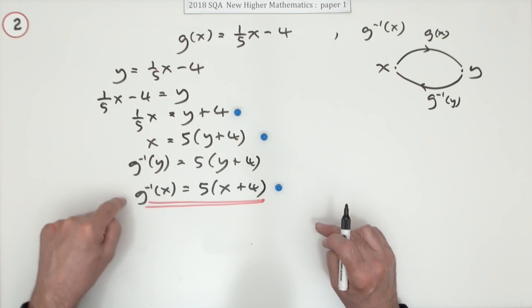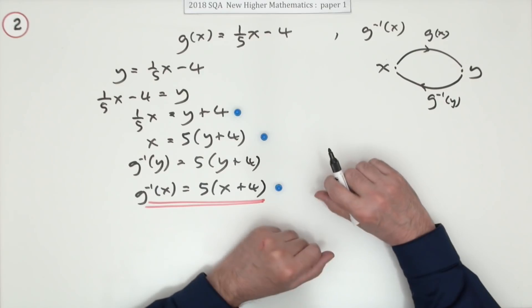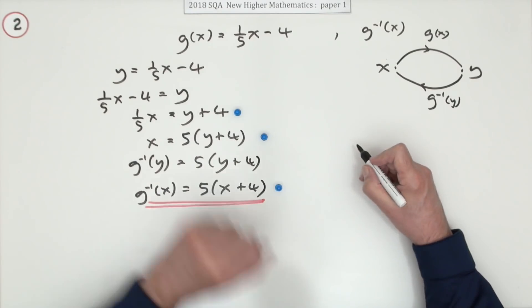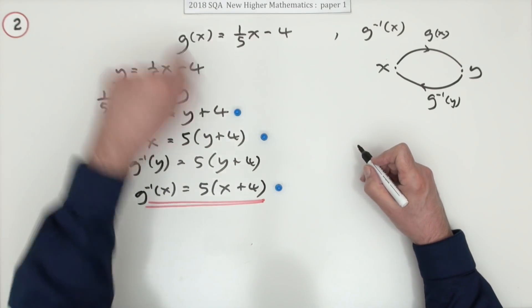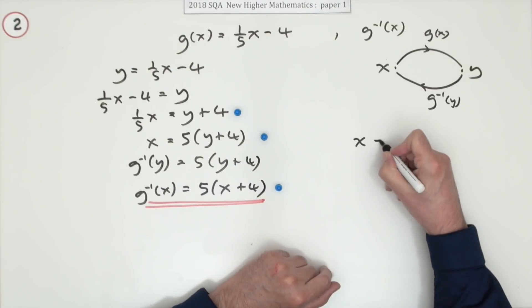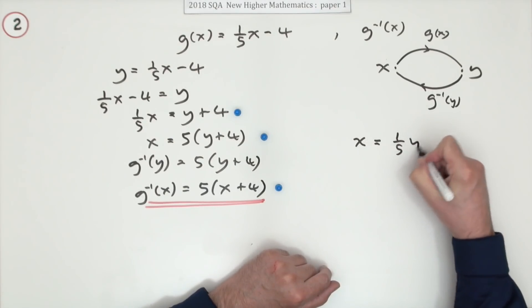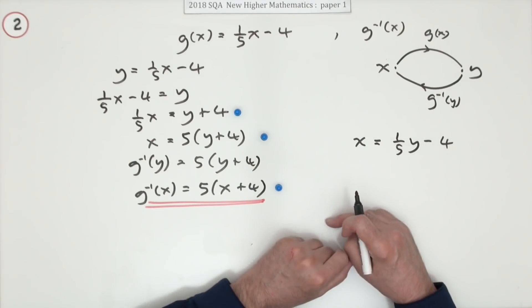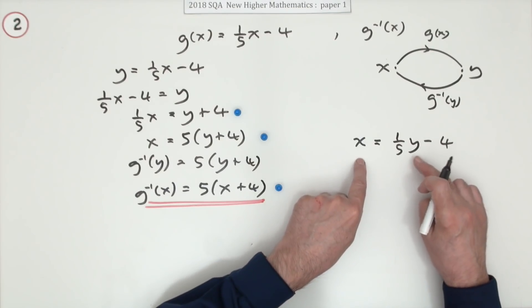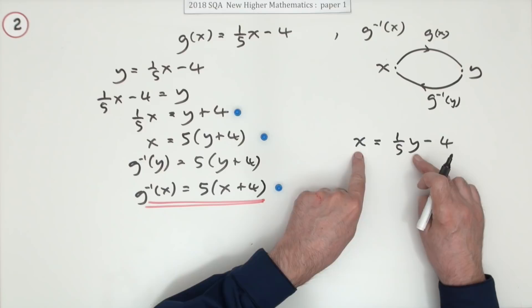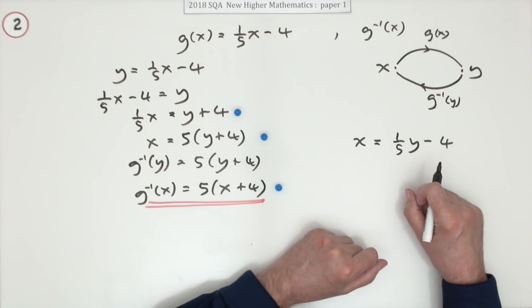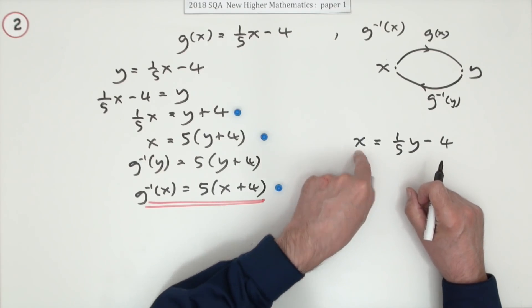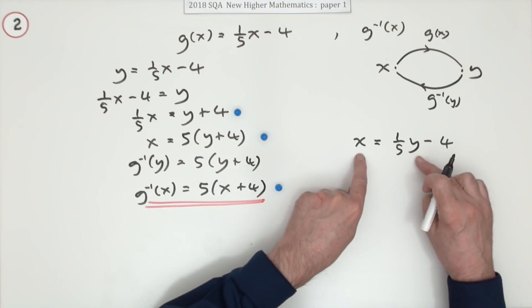So you don't need to show this line. Because of this fiddly little bit here, you'll see another technique which is to say this: instead of saying y equals a fifth of x minus four, what if you were to write x equals a fifth of y minus four? Because after all that's the same calculation. You're sort of misusing the letters here but in this respect they still stand for the same thing - y is what's being put in and x is the result.